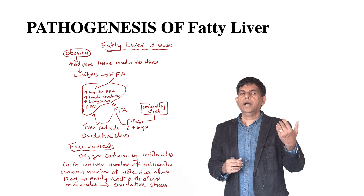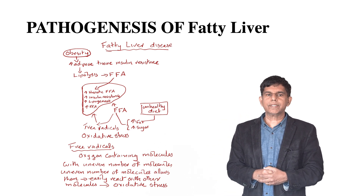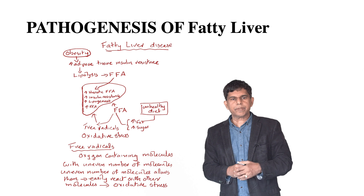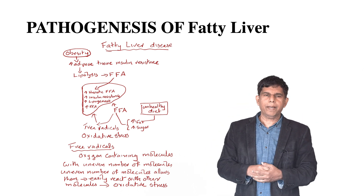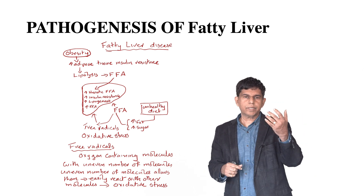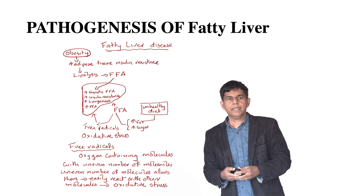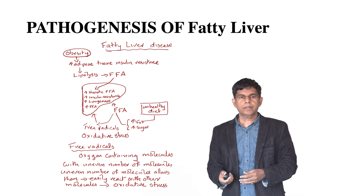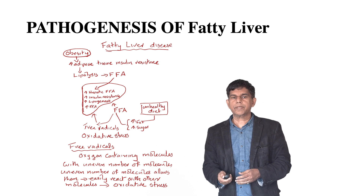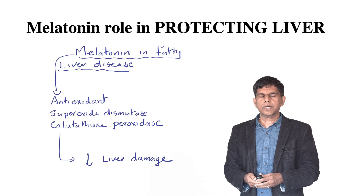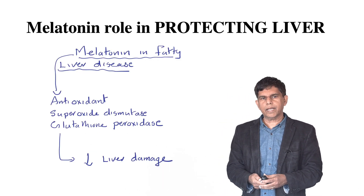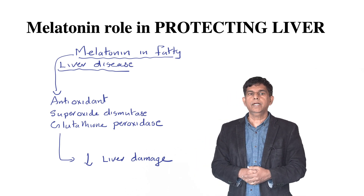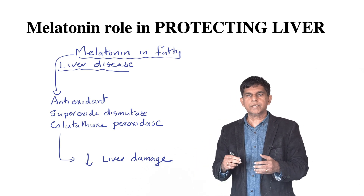Free radicals are oxygen-containing molecules with an uneven number of electrons. This is the main pathogenesis when it comes to fatty liver — oxidative stress and free radicals are central to the liver damage that occurs.